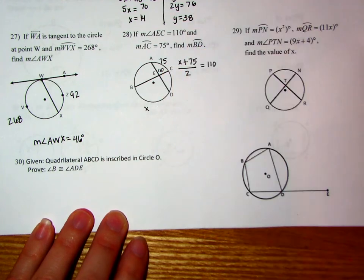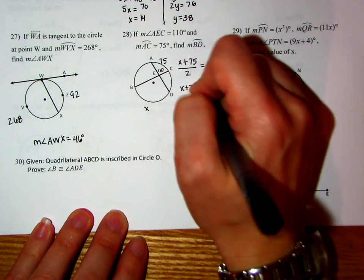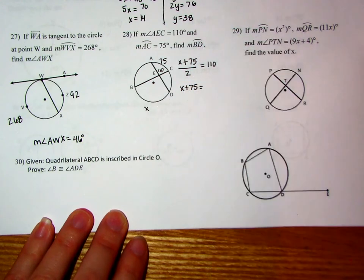And so now if we take this, the first thing we want to do is multiply the 110 by 2 so that when we multiply both sides by 2, it cancels on this side, leaving me with X plus 75 equals 220.